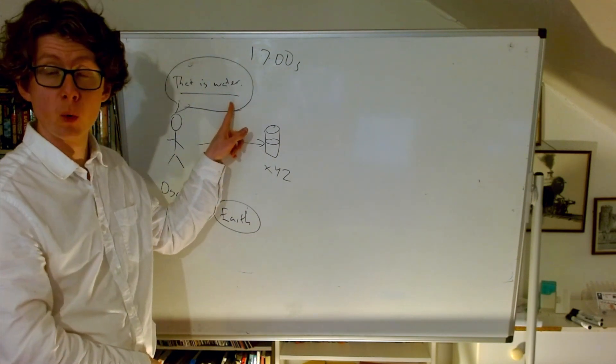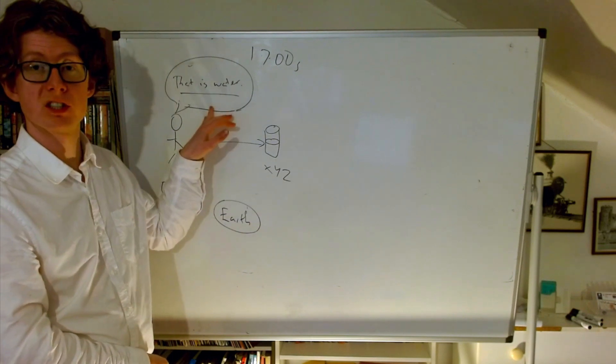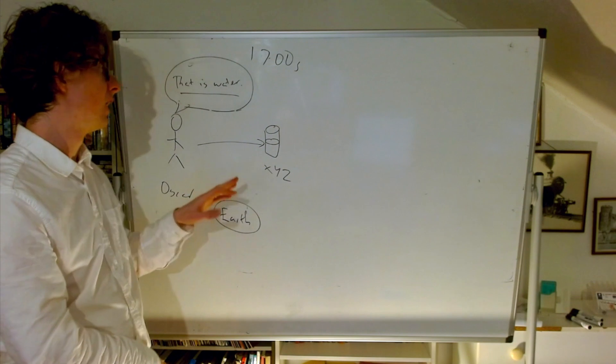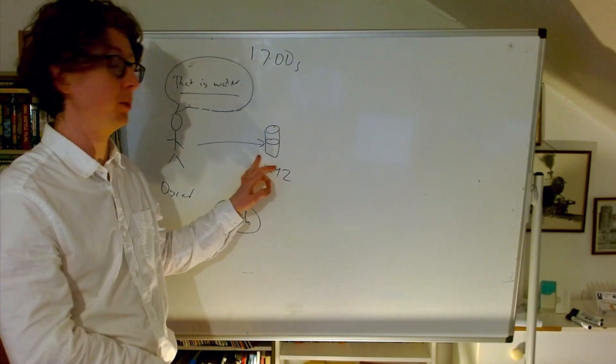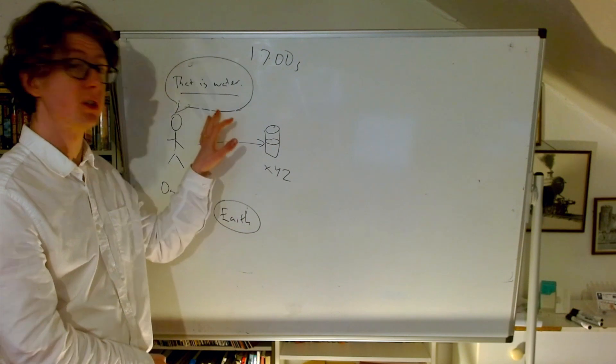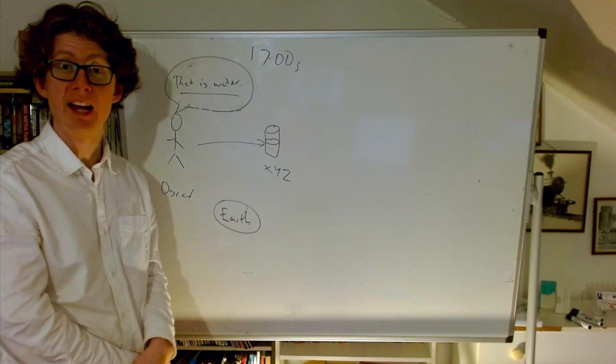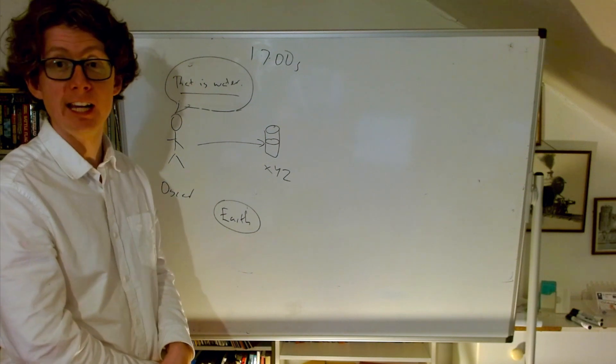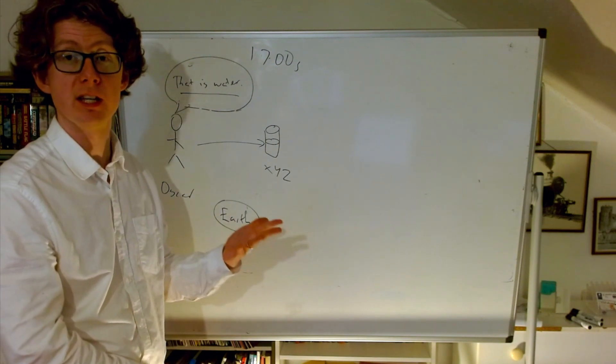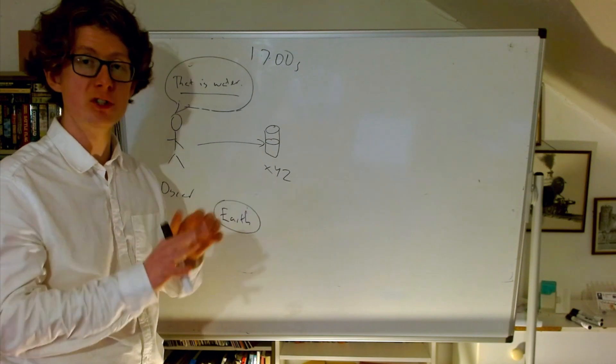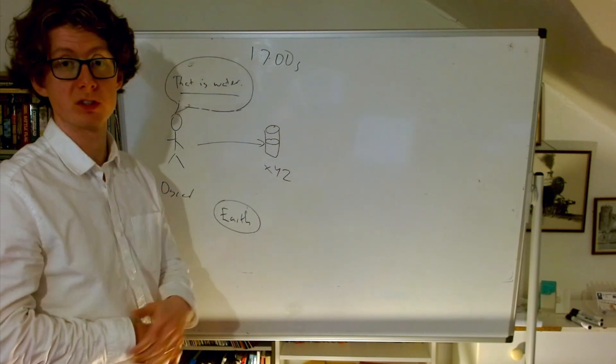But of course, if that's right, that's a problem for this objection that the meaning of the word changed after the discovery that water is H2O. Because if it was right that before we figured out that water was H2O, all it meant was clear drinkable liquid, then we would be wrong to disagree with Oscar here. We would be wrong to say that his claim is false. Because given the meaning it had, it should be perfectly true. There is indeed a clear drinkable substance in front of him. So if you have this intuition that Oscar is actually saying something wrong, that we could correct him, we could say in fact it turns out he was wrong. He was mysteriously faced with this glass of XYZ, even though there's no way he could have known that at the time. If that's what you want to say about this case, that again is a problem for this idea that the meaning changed. Well, maybe not for the changing bit, but the idea that before the change, before the discovery that water was H2O, all it meant was clear drinkable liquid.